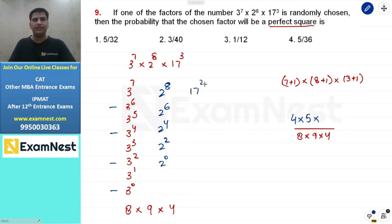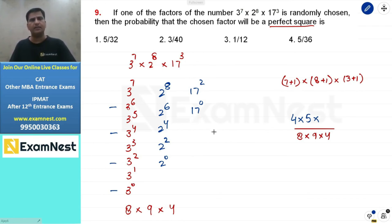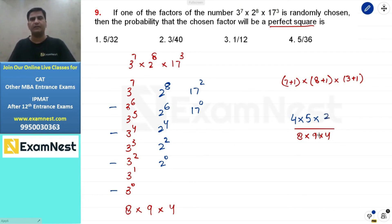Finally, for 17 raised to the power 3, the valid even powers are 17 to the power 2 and 17 to the power 0 — giving 2 favorable cases. The factors that satisfy all conditions are the perfect squares. So the number of favorable cases is 4 multiplied by 5 multiplied by 2, which equals 40. The probability is 40 divided by 288, which simplifies to 5 over 36. So the answer is option 4.